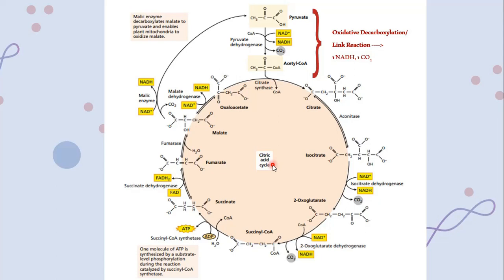This is the whole process, including the link reaction (oxidative decarboxylation) and the citric acid cycle, both of which take place in the matrix of mitochondria. If you have any questions related to the Krebs cycle, you can comment below. If you want me to make a video on any physiology topic, comment it down. If you liked this video, give a thumbs up, as it motivates me to make more informative videos. Thank you.